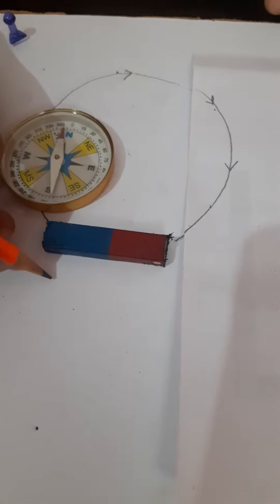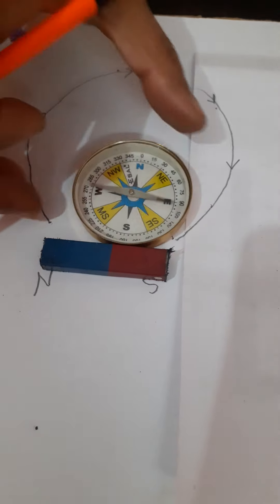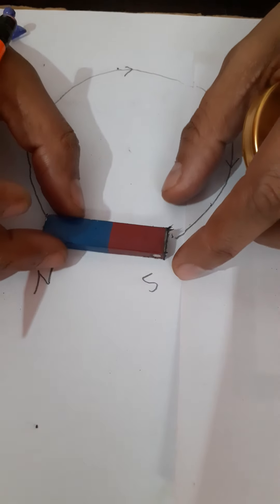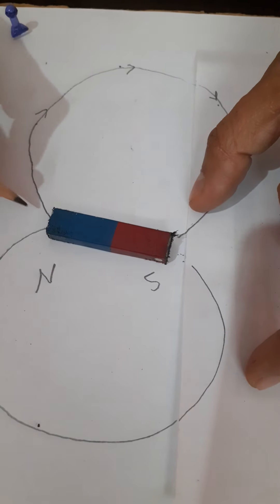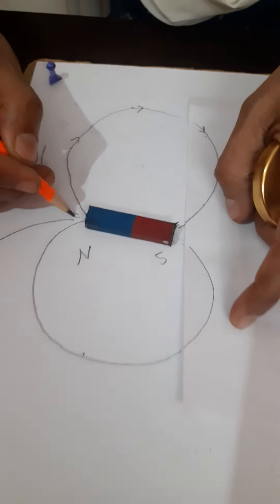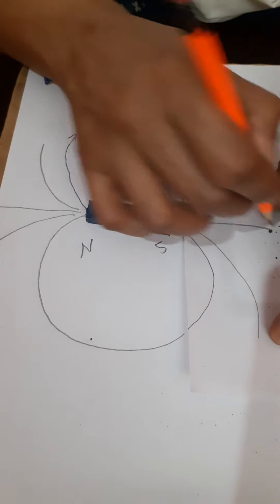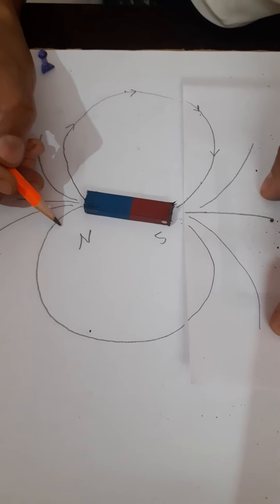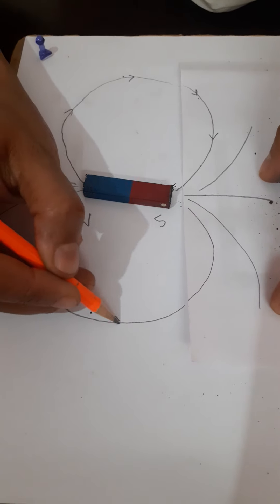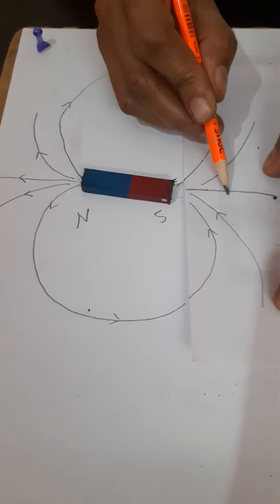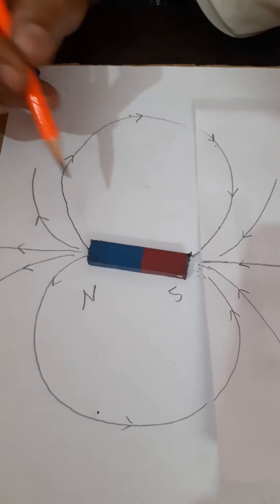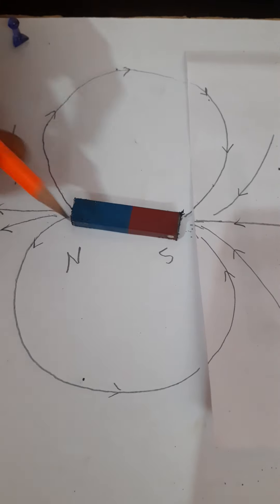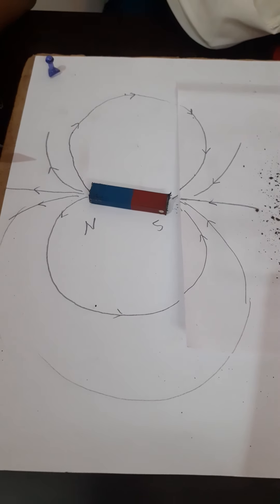This pole is the north pole and this is the south pole, so the field lines emerge from the north pole side and enter the south pole side. If we repeat this for the other sides, we get the full magnetic field line pattern for the magnet. Using the compass needle, field lines always emerge from the north pole and enter the south pole. Make sure when drawing these lines they do not intersect each other and they always form closed curves.